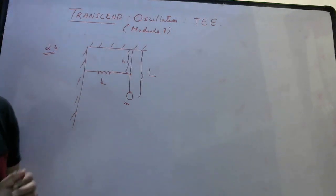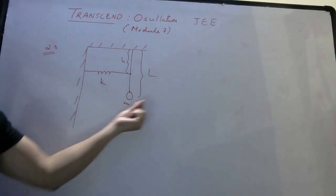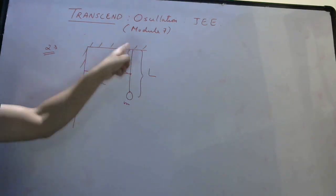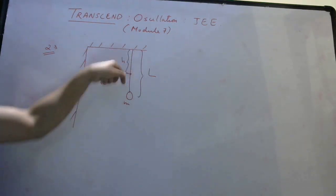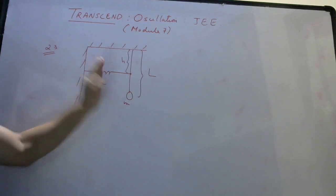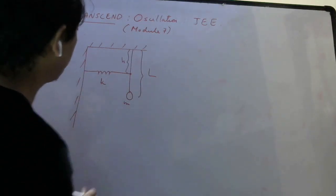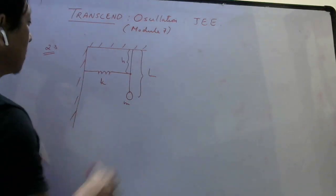Now if the ball is displaced slightly from its mean position. Right now it is at mean position, so tension balances Mg and the spring is neither stretched nor compressed. What would be the angular frequency once you displace it? Let us do this.